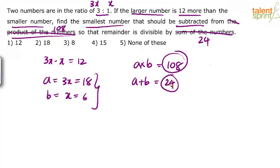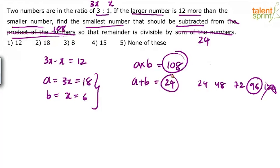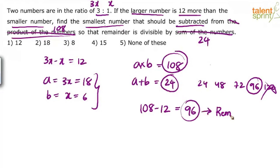Look at the multiples of 24: 24, 48, 72, 96, 120. Since 120 is more than 108, we ignore it. But 96 is a multiple of 24 and is less than 108. So if we subtract 12 from 108, the remainder is 96 — and 108 minus 12 equals 96. This remainder, 96, is properly divisible by 24.